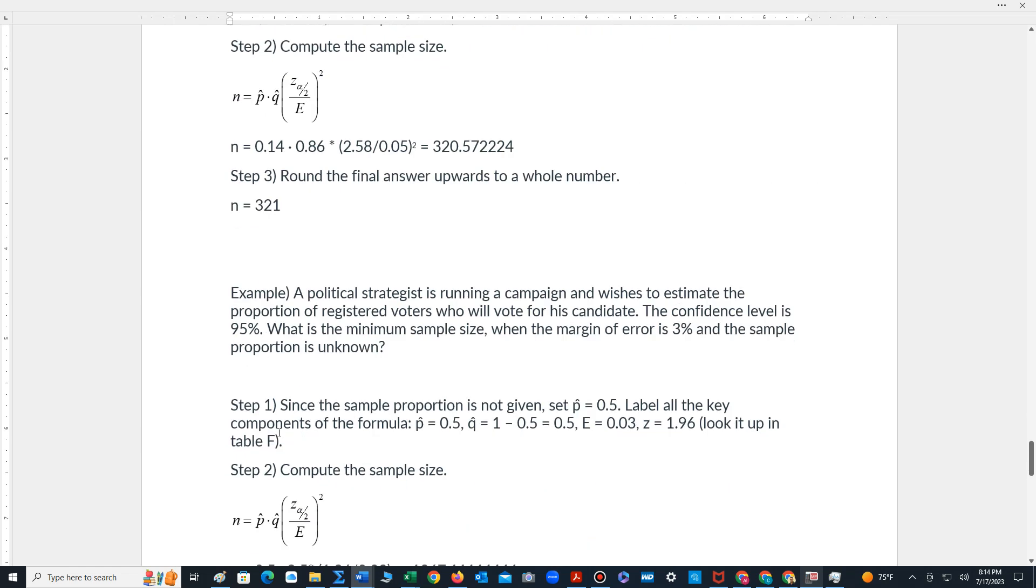Let's look at the second problem. A political strategist is running a campaign and wishes to estimate the proportion of registered voters who will vote for his candidate. The confidence level is 95 percent. What is the minimum sample size? The margin of error is 3 percent and the sample proportion is unknown.